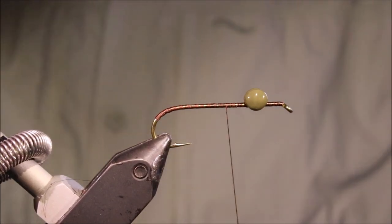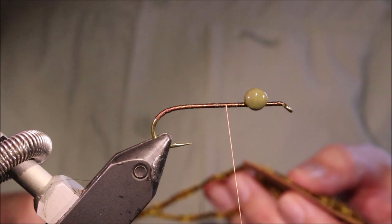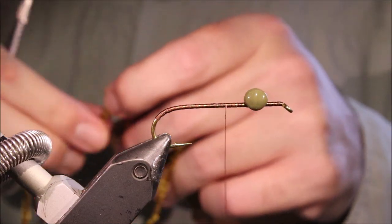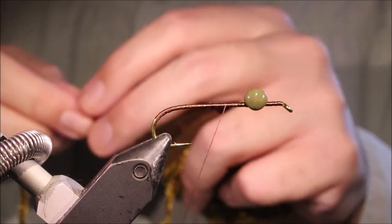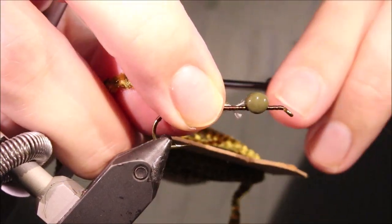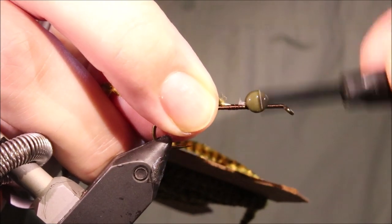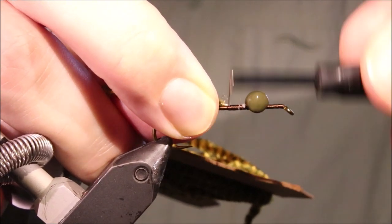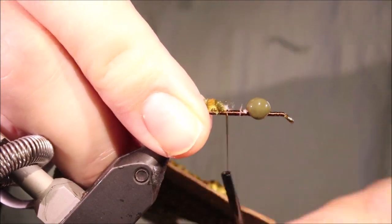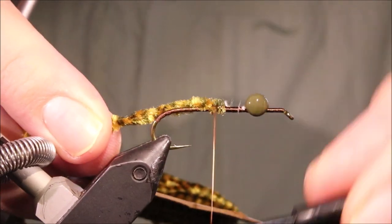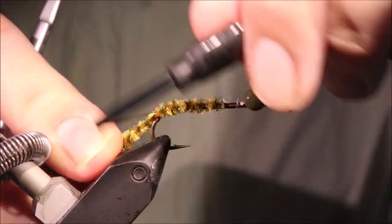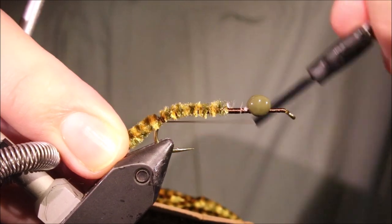Now we're ready for the chenille and I'm using this olive and golden olive variegated chenille. We're going to catch that in by the core at this stage because this has got to be the flat spot where we finish the fly and then we're going to run back over this, all the way down and around the bend.